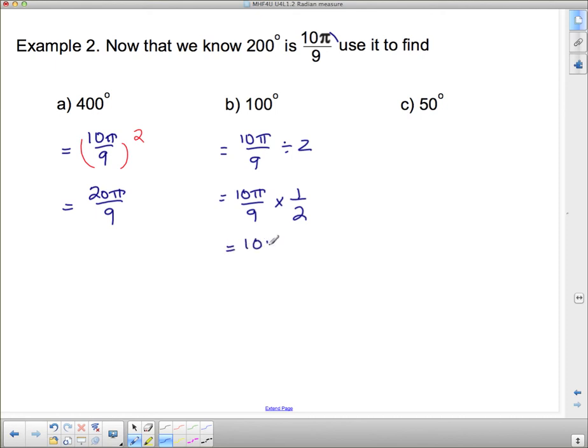And so this is 10 pi by 18. Now this actually reduces. I can reduce, I can take 2 out of the top and the bottom, so that is 5 pi by 9.